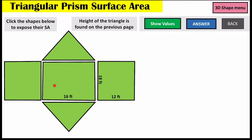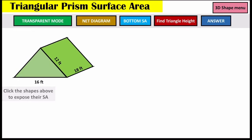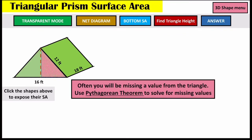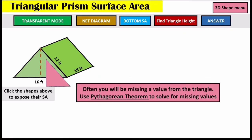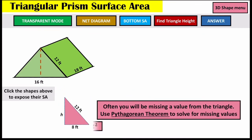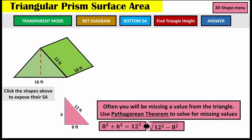The area of a triangle is base times height divided by 2. We have our base which is 16. We do not have our height because the 12 runs along the side of the triangle — it does not give us the actual height. The height goes through the center. The Pythagorean theorem is useful here because when we cut the triangle in half at the top, we can take off a 90-degree triangle and put it to the side, then solve for the missing height h.